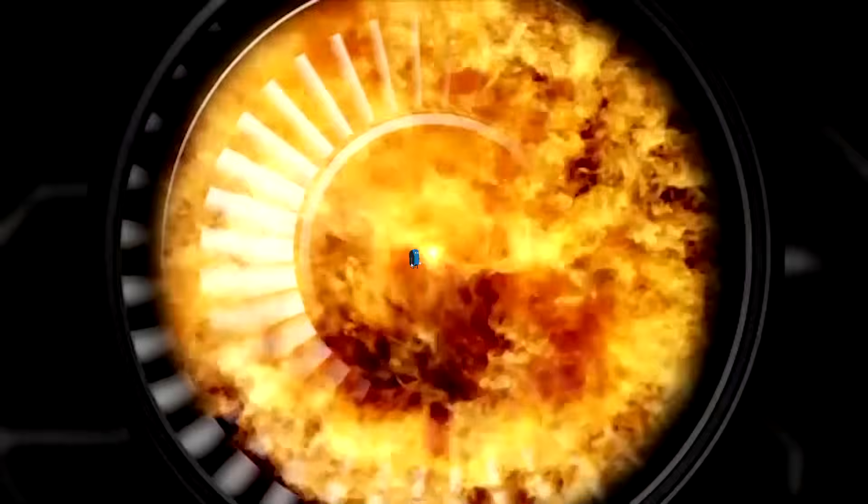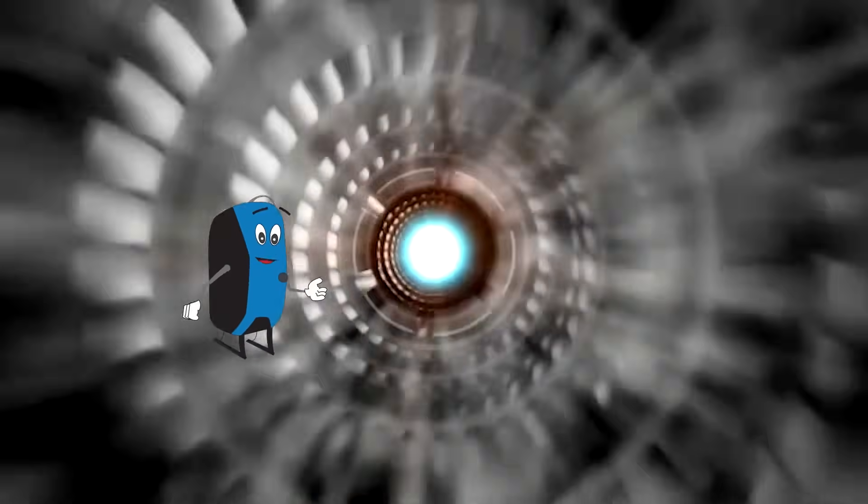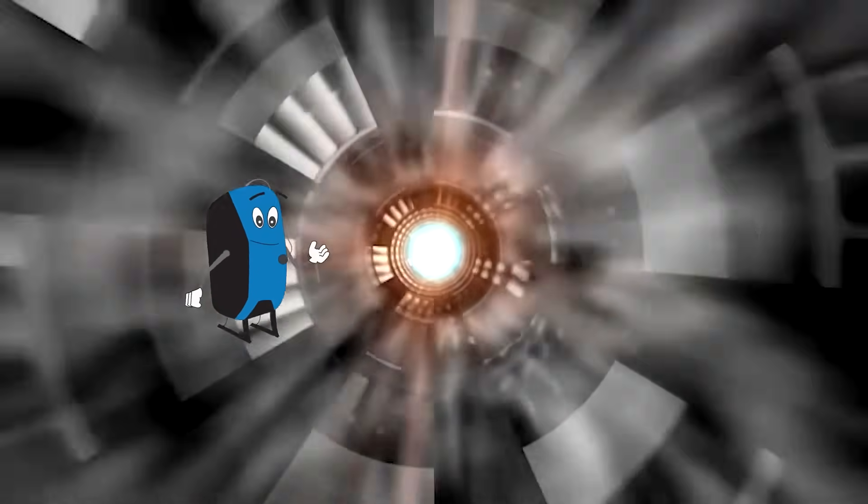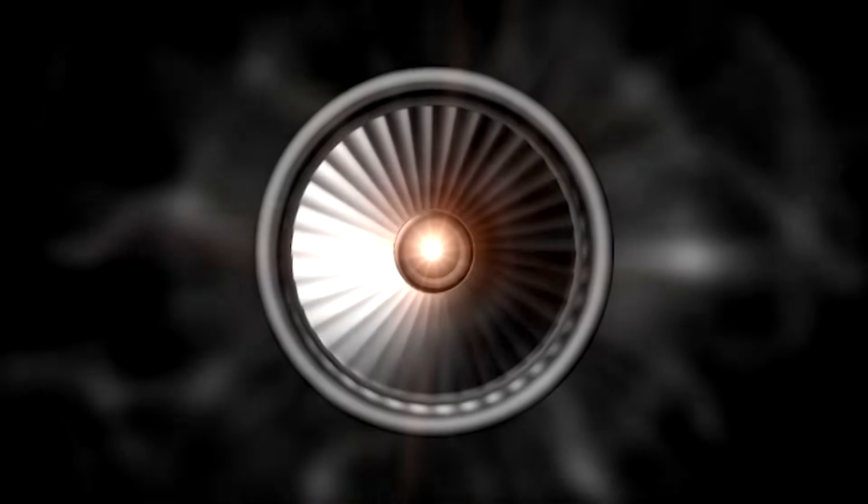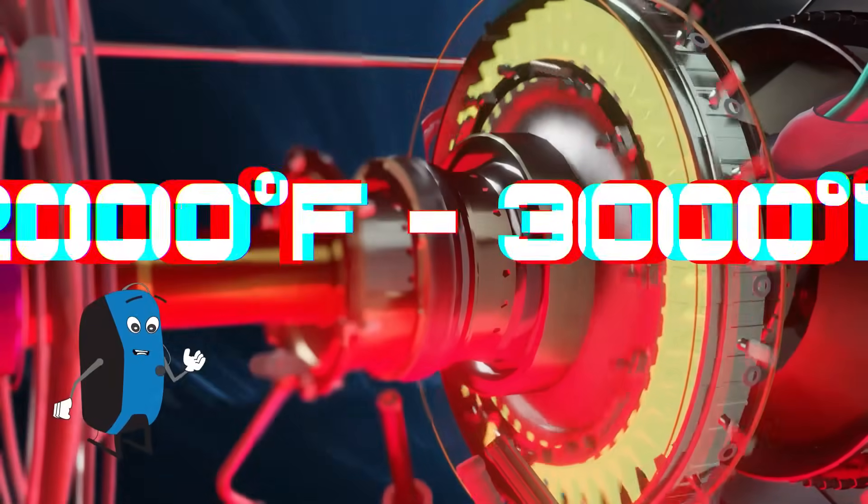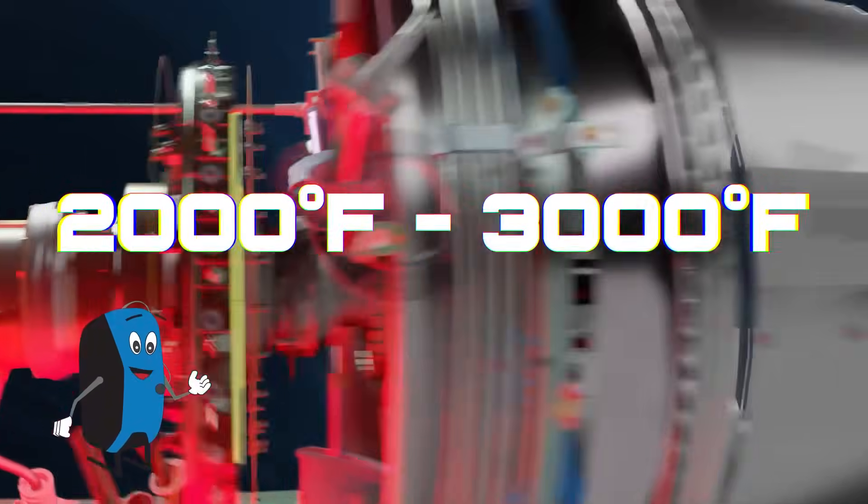After passing through the compression section of the engine, the air enters the combustor. Fuel is mixed with the compressed air in the combustor, where a continuous burning process releases a great amount of energy in the form of even higher temperature. The hot gas stream exiting the combustor can be over 3,000 degrees Fahrenheit.